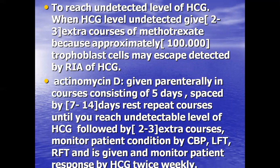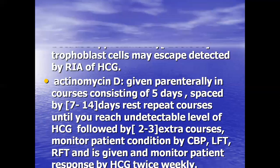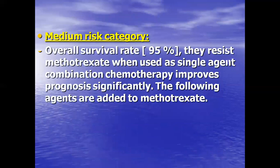Actinomycin D courses are repeated until an undetectable level of HCG is reached, followed by two to three extra courses — the same regimen as methotrexate. Monitor patient condition with complete blood picture, liver function test, renal function test, and assess patient response by beta-HCG twice weekly.